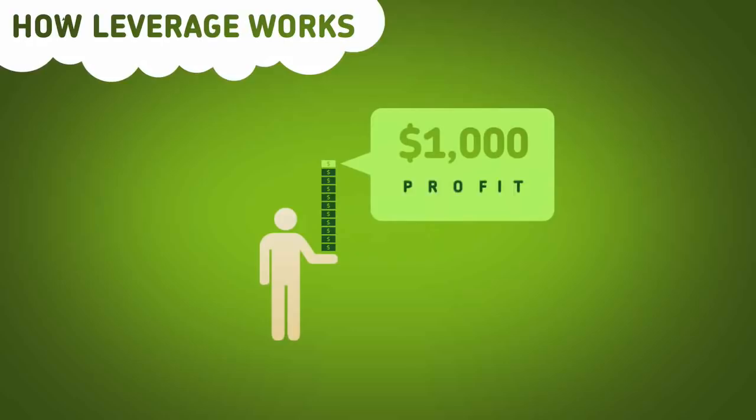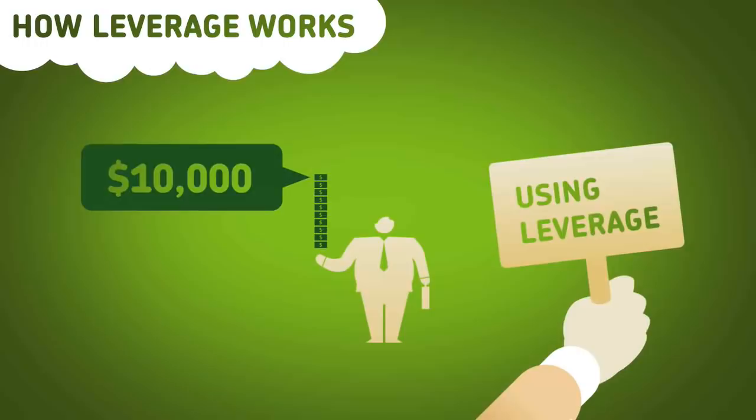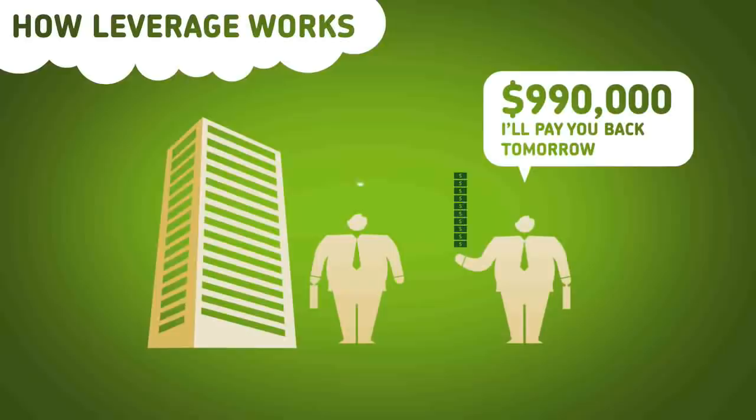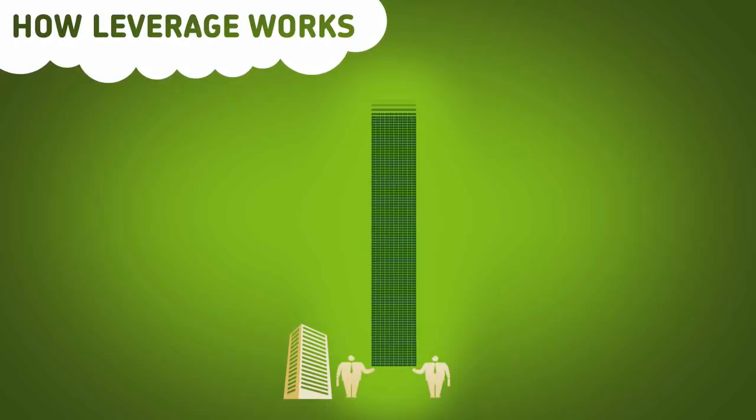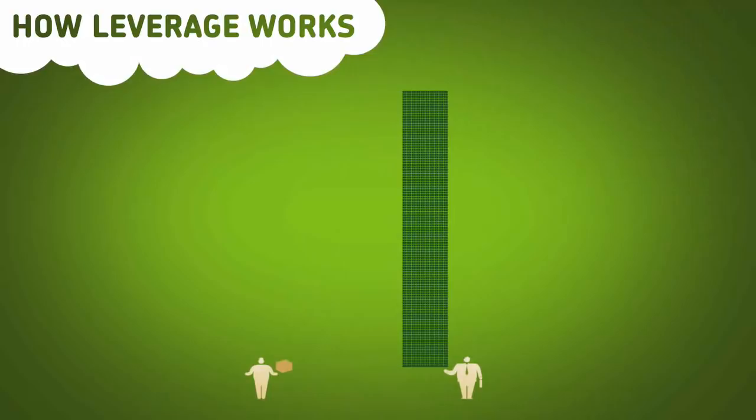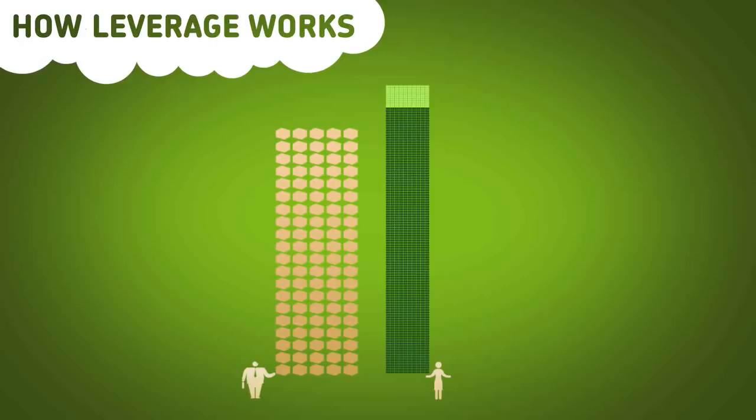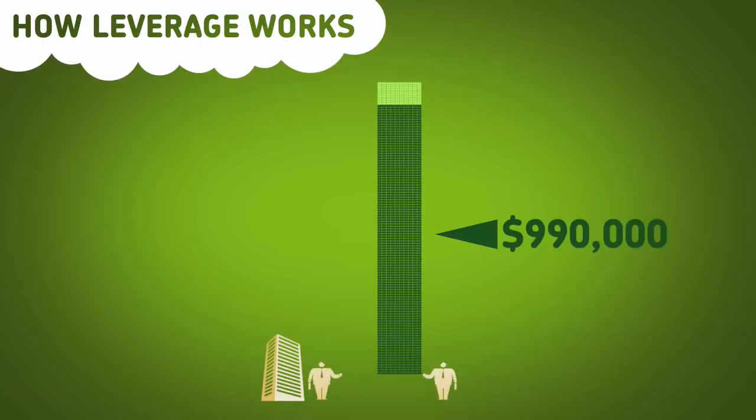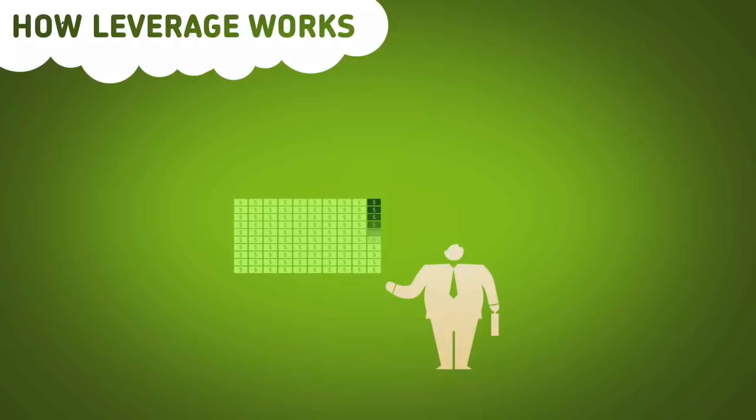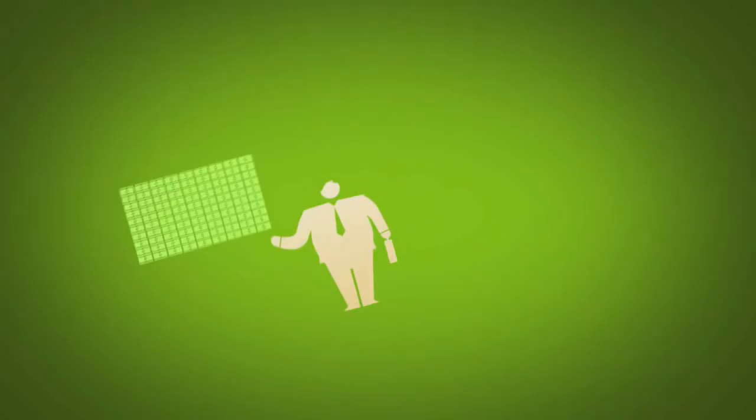But using leverage, someone with $10,000 would go borrow $990,000 more, giving him $1,000,000 in hand. Then he goes and buys 100 boxes with his $1,000,000 and sells them to someone else for $1,100,000. Then he pays back his $990,000 plus $10,000 in interest. And after his initial $10,000, he's left with a $90,000 profit versus the other guy's $1,000. Leverage turns good deals into great deals. This is a major way banks make their money.